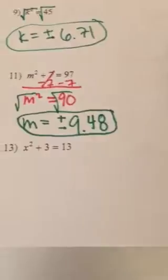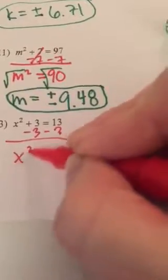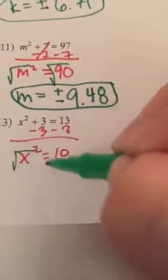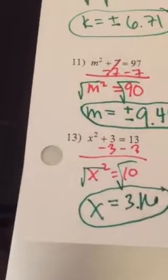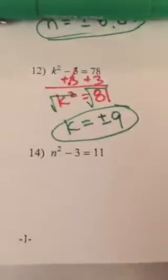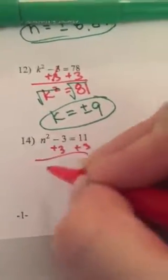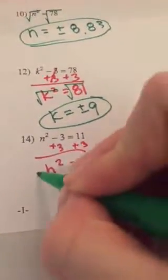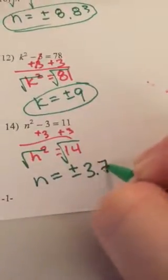On 13, we have a plus 3 attached to our x squared, so we're going to subtract it. x squared equals 10. Now that x squared is by itself, we can square root it. x equals plus or minus 3.16. On 14, we have a negative 3 attached to n squared, so we're going to add it. n squared equals 14. n squared is by itself, so now to get rid of that power, we square root: n equals plus or minus 3.74.